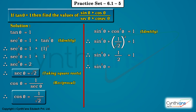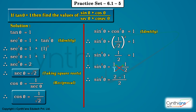Bringing 1 upon 2 to the right hand side: sin square theta is equal to 1 minus 1/2, which is 1/2. Taking square roots on both sides, sin theta is equal to 1 upon root 2. Box it.